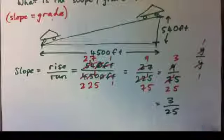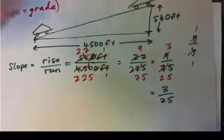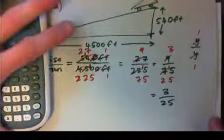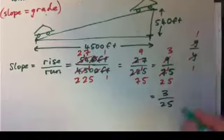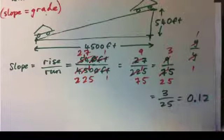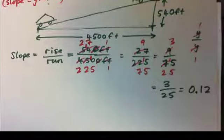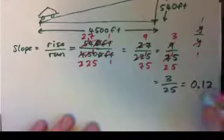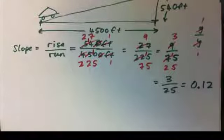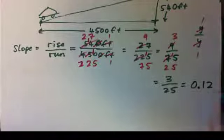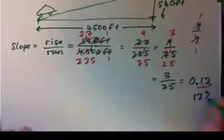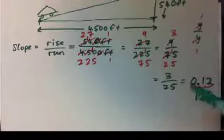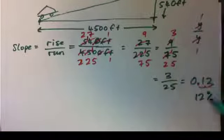We'll also give this as a percentage. The quickest way is to put it in your calculator: 3 divided by 25 gives the decimal 0.12. So the slope or grade is 3 over 25 as a fraction, 0.12 as a decimal, and — moving the decimal two spaces to the right — 12% as a percentage. That's how you'll see it on a road grade sign.